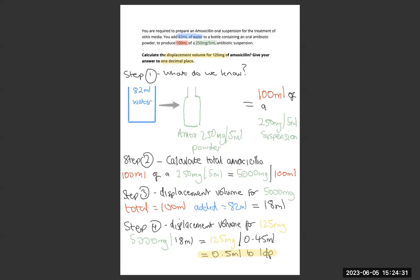So we have our volumes of water, how much we're having as our final concentration and our strength as well. But we need to work out the displacement volume for 125 milligrams. So what do we know? Got a drawing for you.